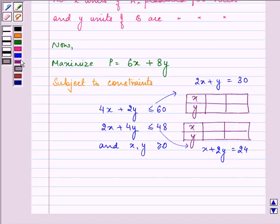Now, two points satisfying these two equations are: if y is 0, then x is 15, and if x is 0, y is 30. For the second equation, if y is 0, x is 24, and if x is 0, y is 12.